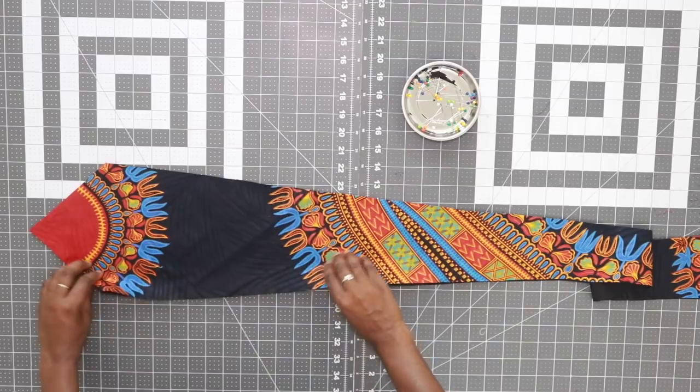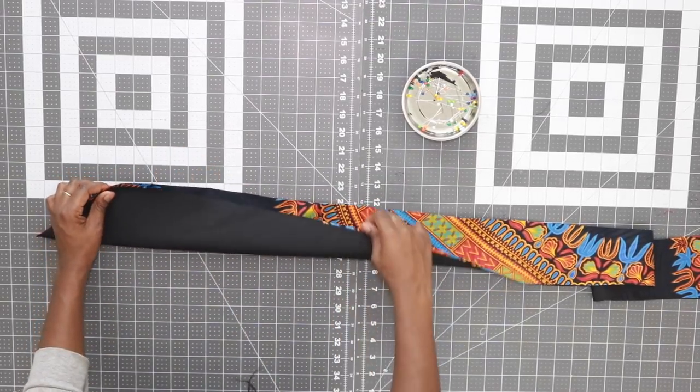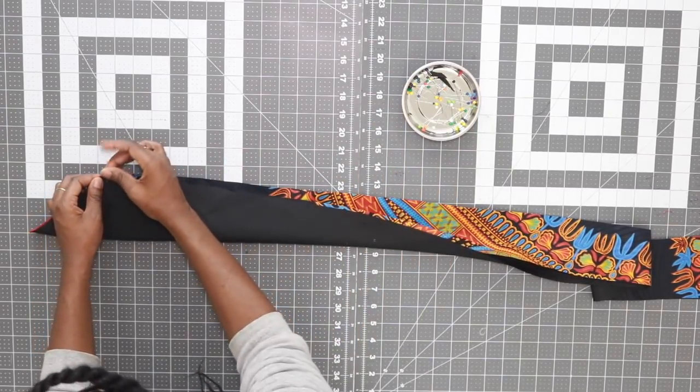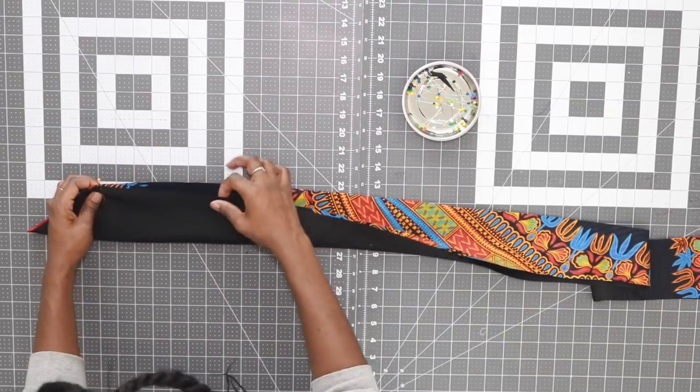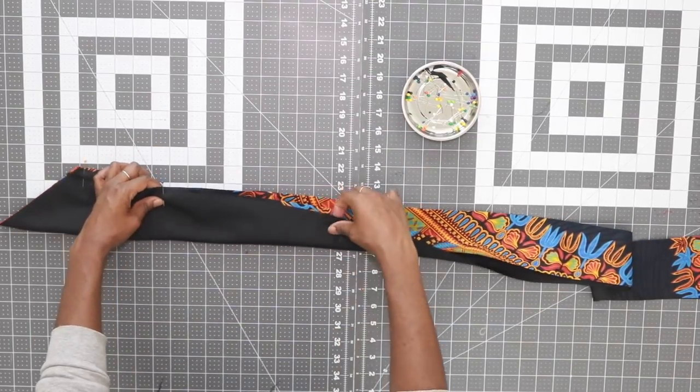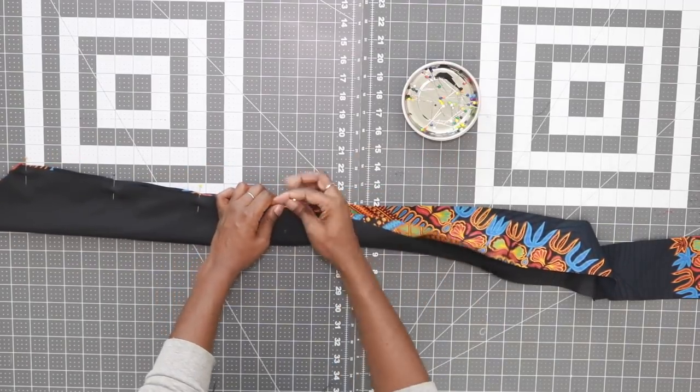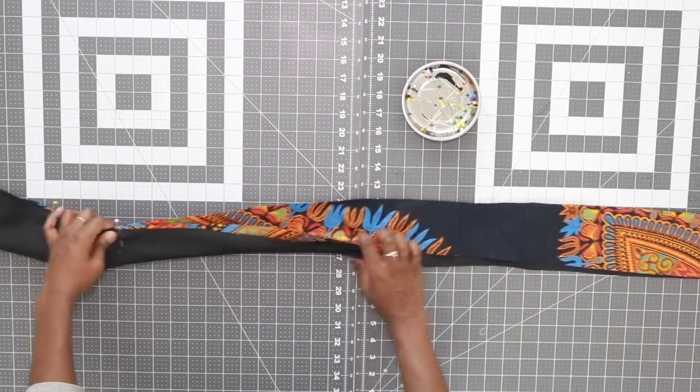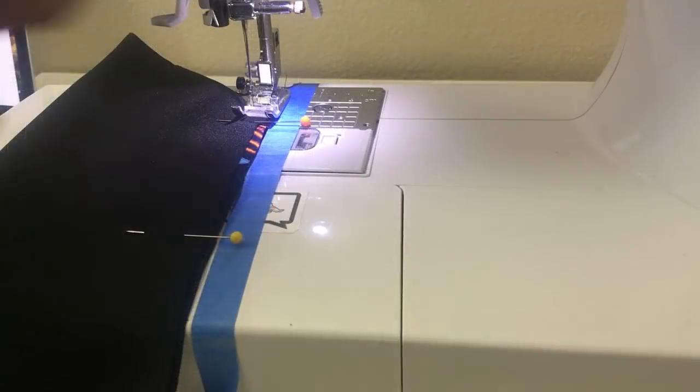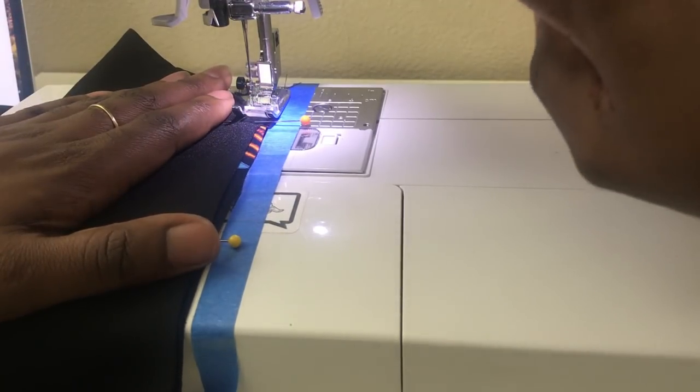Now take your tie and fold it in half and pin in place. Starting at one end, go ahead and line it up with 3/8 inch seam allowance.